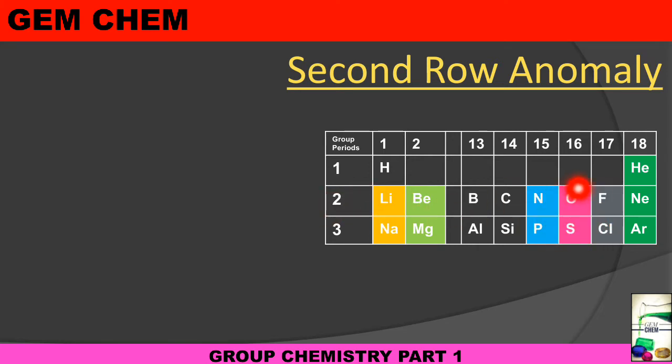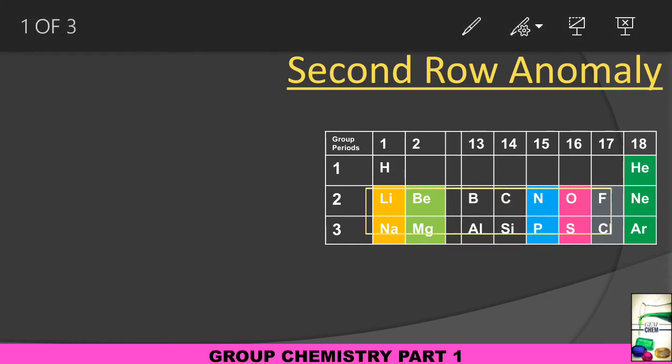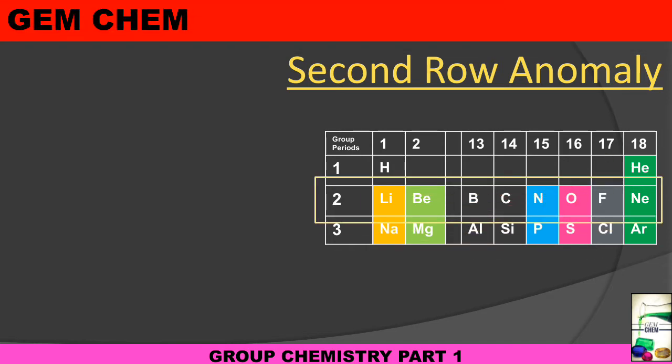with the others. We can see that oxygen exists as O2, whereas sulfur exists as S8. What is the reason for this? Basically, we see that Period 2 elements are very small.